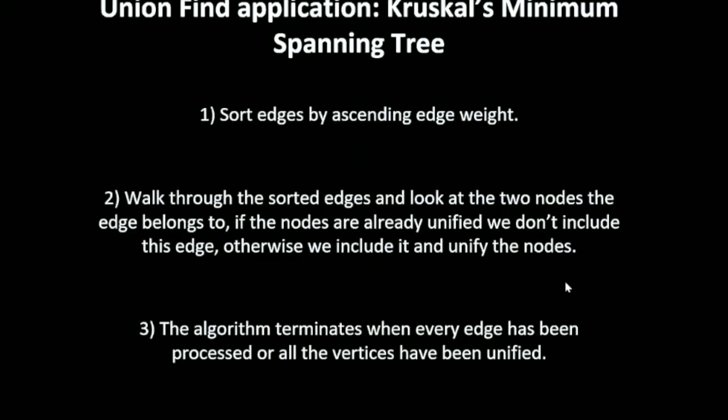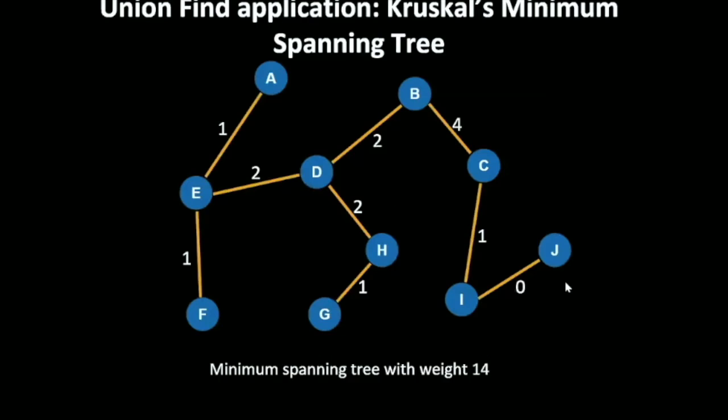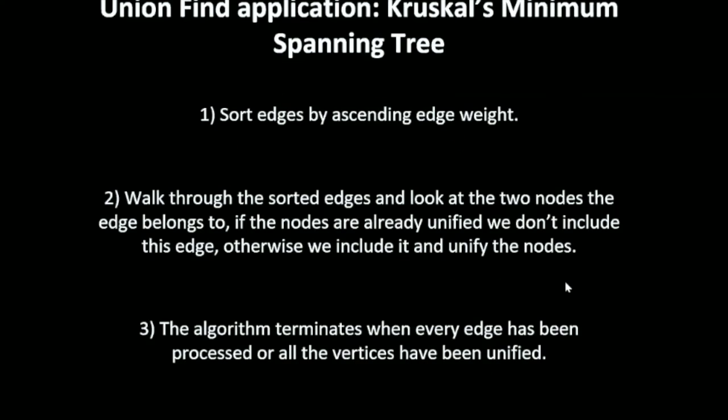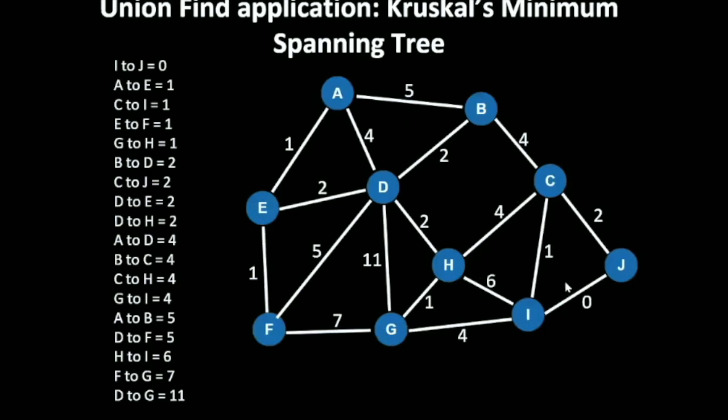What you do is you list out all the edges. You sort those edges by ascending edge weight. Then you walk through each edge, walk through each sorted edge, look at the two nodes that edge belongs to. In this case, you can see that the zero edge has the least cost and it belongs to i and j. So you include that in your set. The algorithm terminates when every edge has been processed and all the vertices have been unified. I'll show you how this works on this graph.